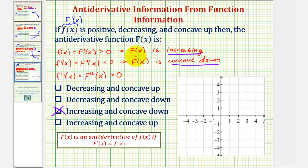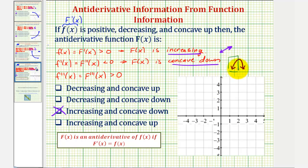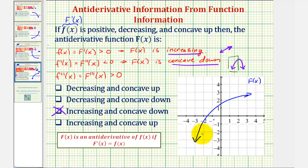But before we go, let's sketch a possible graph of big F. Because big F is increasing, as x increases the function values increase, so the graph will be going uphill from left to right. But the function is also concave down, so it must resemble a concave down shape. Since the function is only increasing, it resembles the left side of that concave down curve. A possible graph for big F of x might look something like this — increasing and concave down.